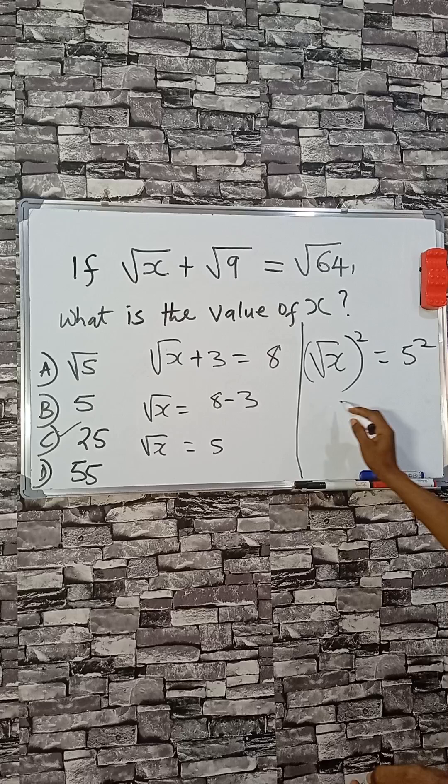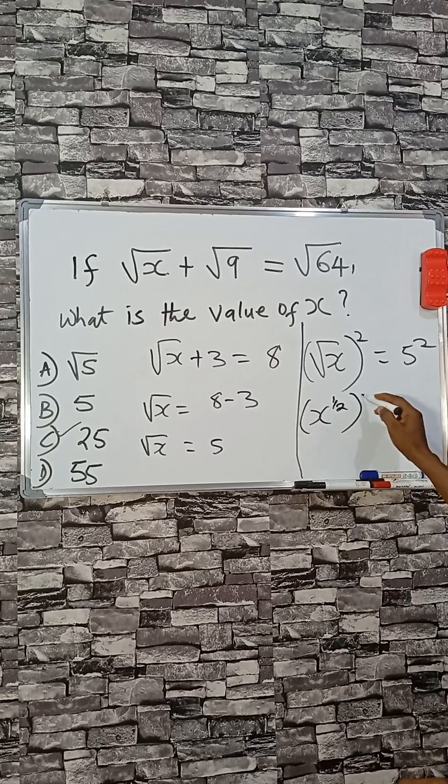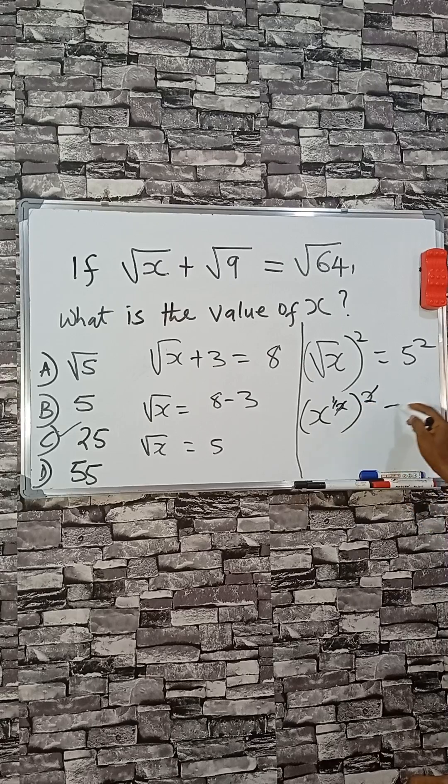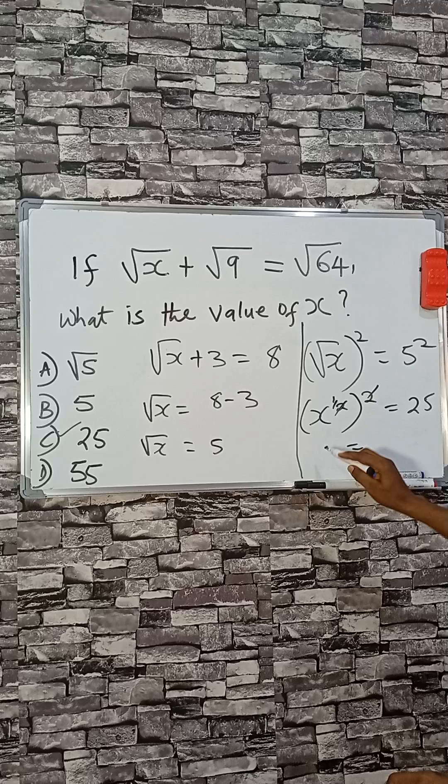When I do so, remember that square root of x means x to the power of half, so this squared will cancel this, giving me 25. So x from here equals 25.